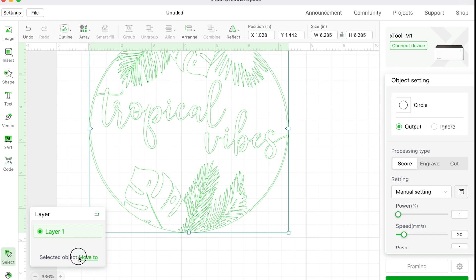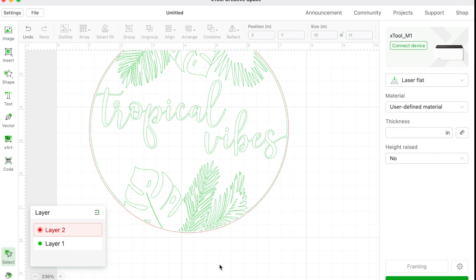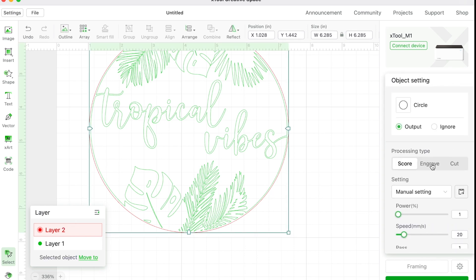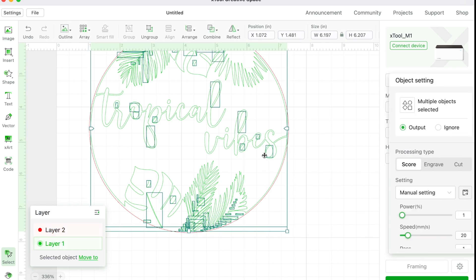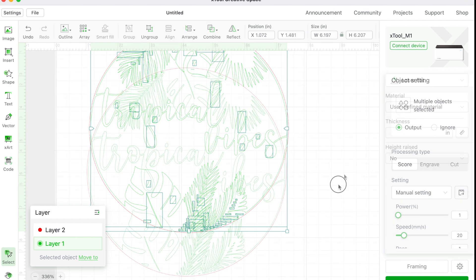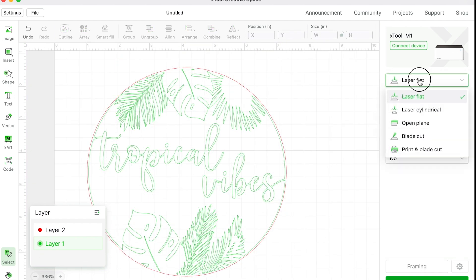So if you get as frustrated as I did in trying to find the two layers, click on whatever one you're adding and change it to move to a new layer. And that's easy to click on it so you can make sure one is score and one is cut.